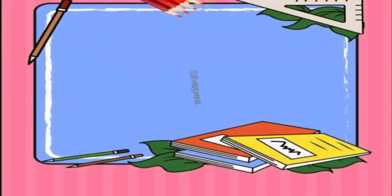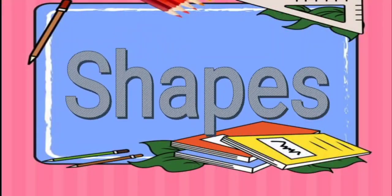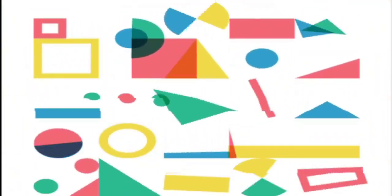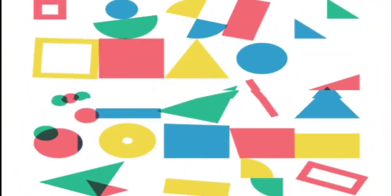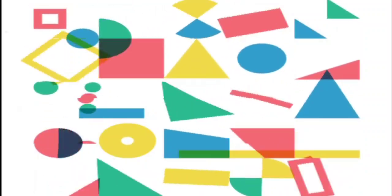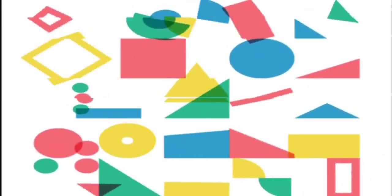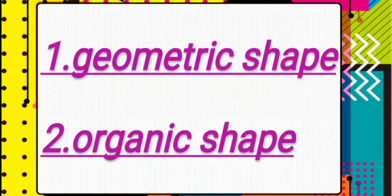Let's move to shapes. A shape is an enclosed area that is two-dimensional. It is limited to height and width. There are two categories of shapes: geometrical shapes and organic shapes.